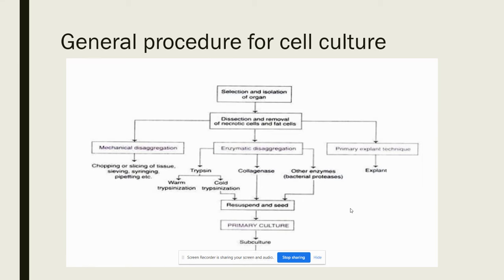The general procedure for cell culture: first, selection and isolation of the organ takes place, then we dissect and remove necrotic or dead cells. After that we carry out mechanical disaggregation or enzymatic disaggregation, or we can use the primary explant technique. Mechanical disaggregation can be done by chopping, slicing, sieving, syringing, or pipetting. Enzymatic disaggregation uses enzymes like trypsin, collagenase, or bacterial proteases. Cells are then resuspended and seeded to form primary culture.